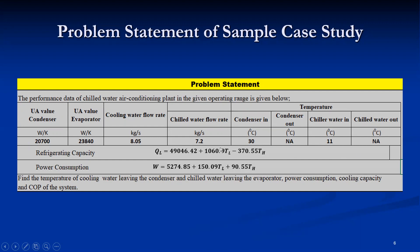Based on the compressor specifications and performance data, equations for QL and work input W are developed. These equations are for a particular compressor model — as the model varies, the equations also vary. We need to calculate: the cooling water temperature leaving the condenser, the chilled water temperature leaving the evaporator, the compressor power consumption, the cooling capacity, and finally the COP of the system.